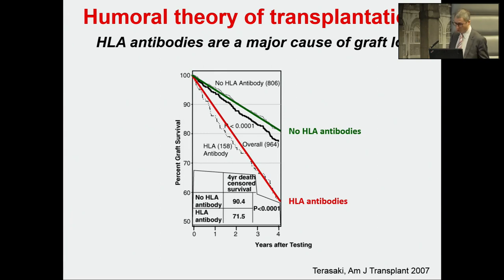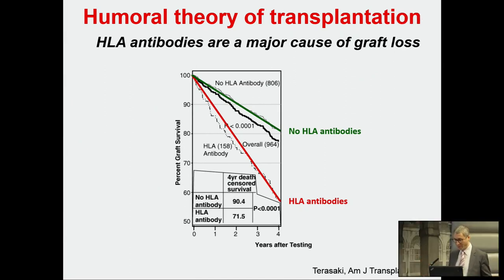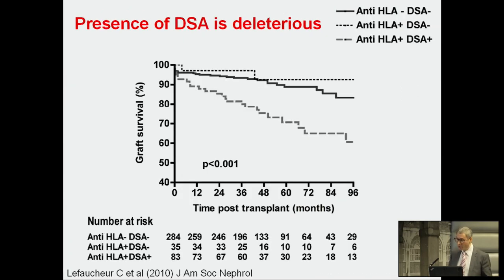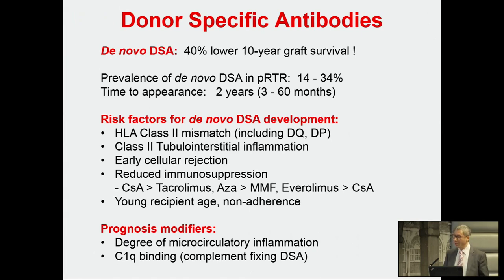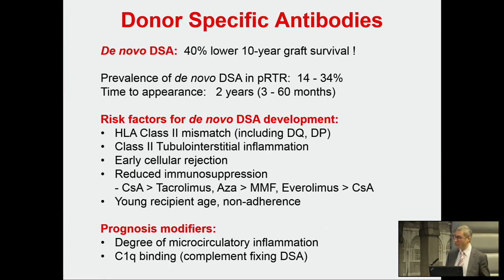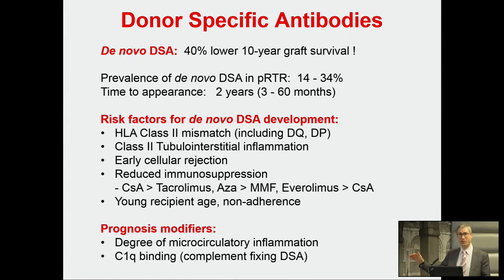What Terasaki's initial work showed is that the presence of HLA antibodies on an individual patient basis is questionable, but when you look at groups of patients they are a major cause of graft loss. Having HLA antibodies itself may not have much impact, but as soon as they become donor-specific, there is a statistically significant reduction in graft survival. We check for A, B, and DR mismatches, but we get a lot of HLA class 2 antibodies formed against both DP and DQ.